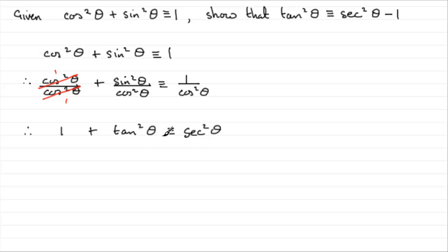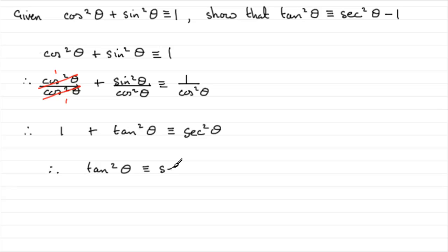So you can see this is coming to what we've got to prove. All we've got to do is take 1 away from both sides, so therefore we end up with tan²θ is identical to sec²θ minus 1. And there you have it.